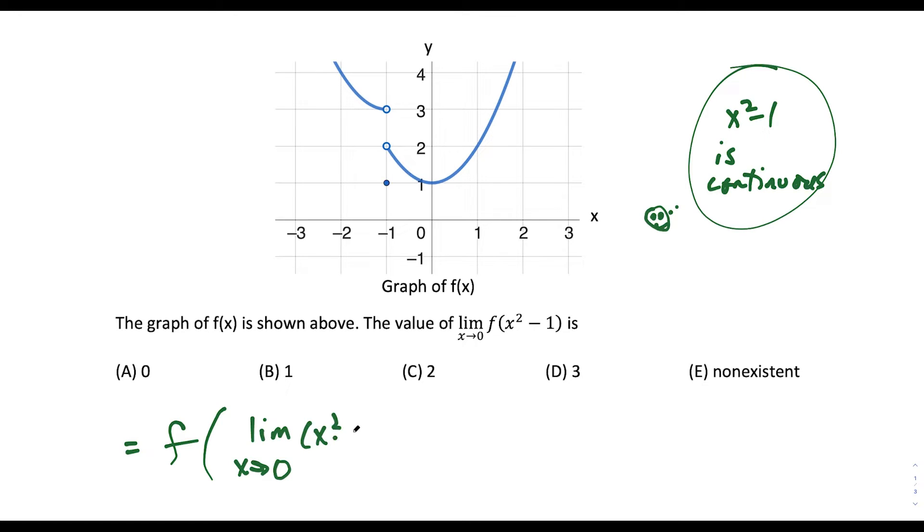So they attempt this limit by saying f of the limit as x approaches 0 of x squared minus 1 on the inside. And if you simplify it this way, what you get is f of... if we plug in 0 here,